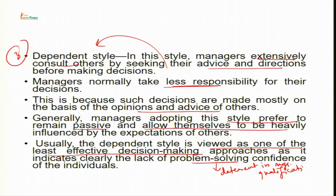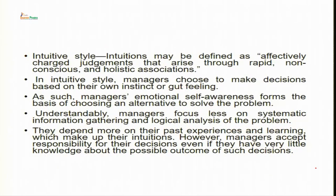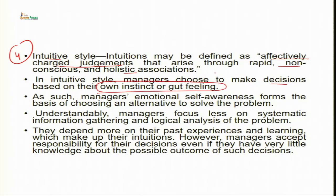The dependent style is generally viewed as one of the least effective decision making approaches, as it clearly indicates a lack of problem-solving confidence — one of the deterrents in managerial qualification. A manager has to be courageous enough to take decisions. The fourth style is the intuitive style, which is also based on heuristics. Intuition may be defined as affectively charged judgments that arise through rapid, non-conscious and holistic associations.